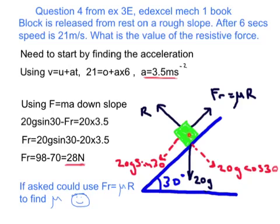Block is released from rest on a rough slope. After 6 seconds, its speed is 21 metres per second. What's the value of the resistive force? Now this is a clever question because they're asking us to find acceleration really. First, we've got to use some SUVAT.